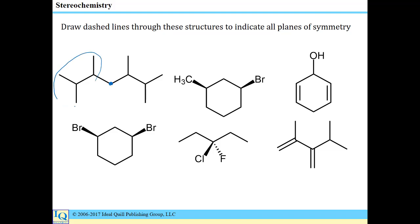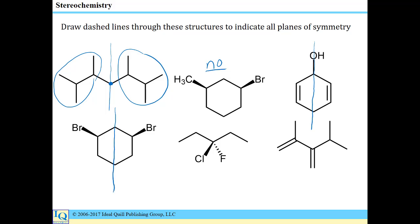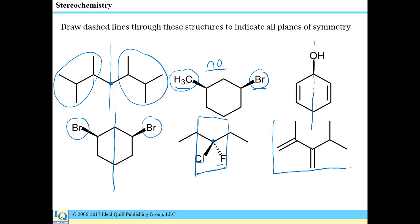If you identify a carbon and on each side you have the same group, there should be a plane of symmetry that passes through that carbon atom. There are no planes of symmetry available in this molecule, but there is a plane of symmetry in this molecule and in this molecule — this bromine and this bromine are identical. This molecule has a plane of symmetry that passes through the carbon in the center and bisects the Cl and F substituents. And then this molecule would have a plane of symmetry in the plane of the page. A very good way to identify and convince yourself of these different scenarios is to build models with a model kit and have a physical object in your hand that you can manipulate.